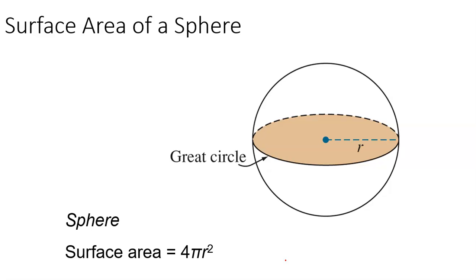One more type and then we'll do a summary table. Surface area for a sphere. A sphere is unique because it doesn't have a base — all other objects sit on a table without rolling off. If you slice a sphere exactly through the center — like slicing an orange in the middle — we call that cross-section the great circle.